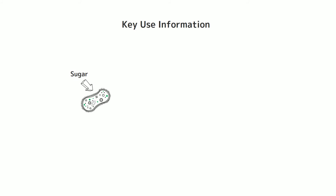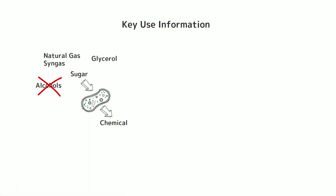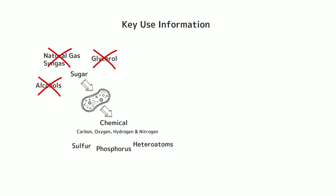While the calculator is a useful tool, there are some limitations. Firstly, the current version of the calculator is only appropriate for sugar feedstocks, and results should not be extrapolated to other feedstocks, such as alcohols, natural gas, or syngas, or other feedstocks such as glycerol. The calculator can be used for a wide variety of chemicals containing carbon, oxygen, hydrogen, and nitrogen atoms, but currently cannot be used for chemicals containing sulfur, phosphorus, or additional heteroatoms.